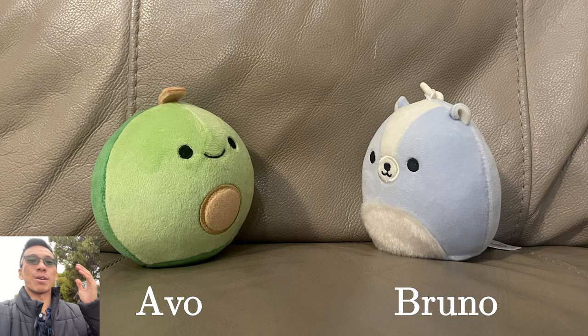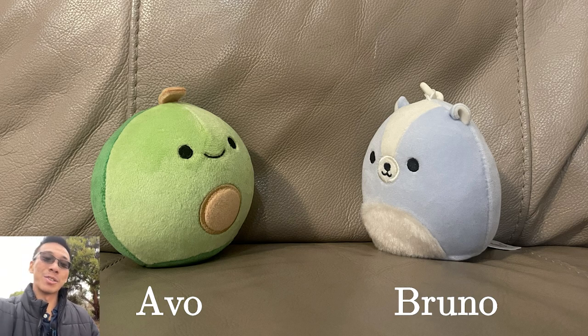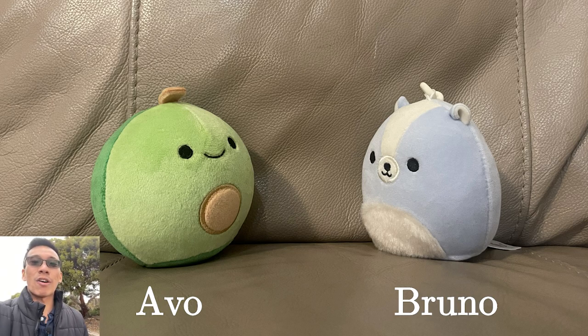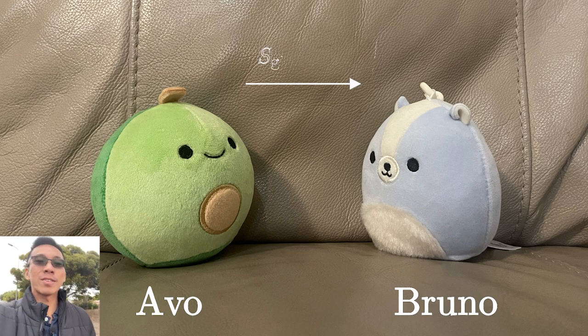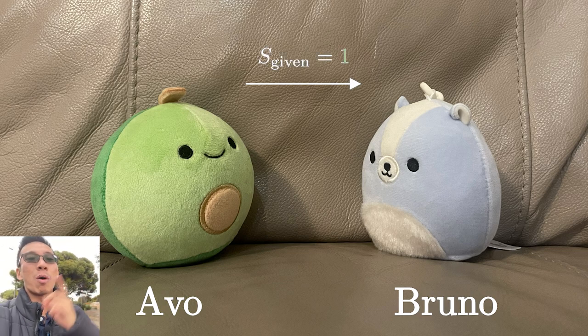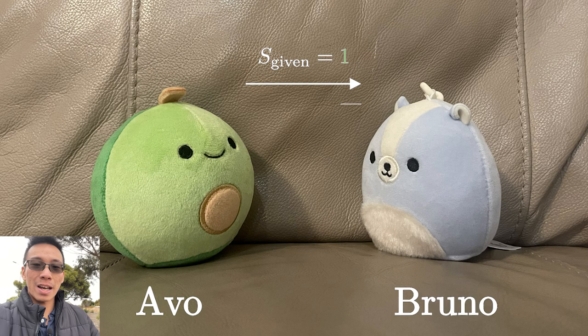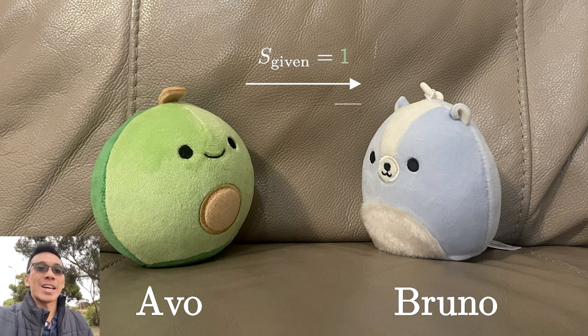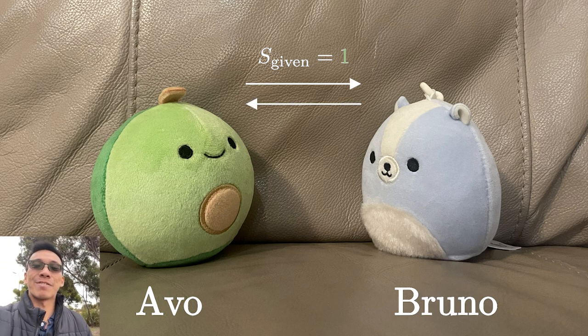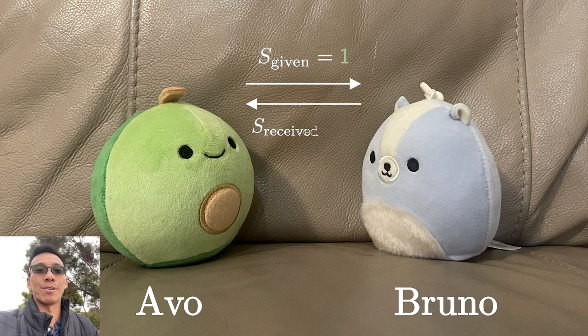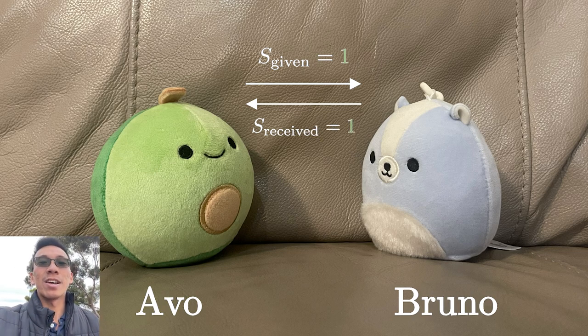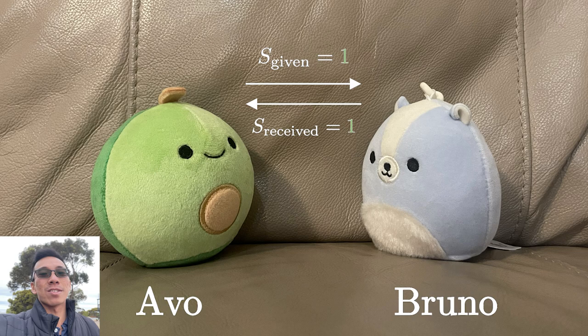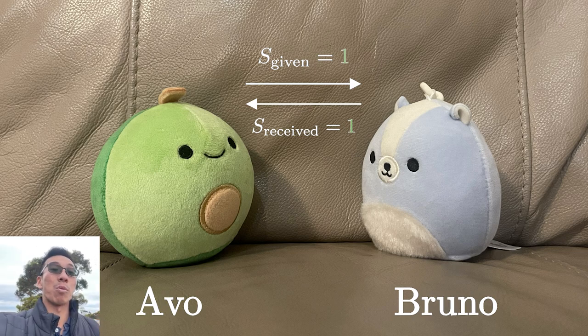This is Avo and this is Bruno. Avo and Bruno are on good terms with each other, and therefore Avo gives Bruno space for vulnerability. This causes the first term to equal 1. Likewise, Bruno feels comfortable talking to Avo and Bruno also decides to give space for vulnerability to Avo. In other words, the space for vulnerability that Avo receives is also present, and therefore this term equals the number 1.